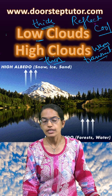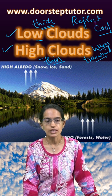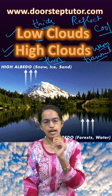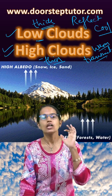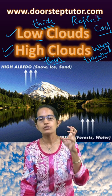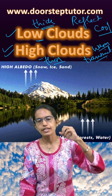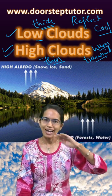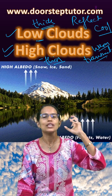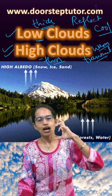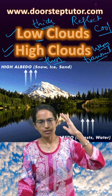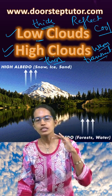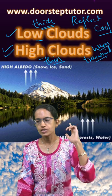So, that is one of the major differences between the low thick clouds and the high thin clouds. Low thick clouds reflect and keep the surface cool. However, high thin clouds are transmitting and therefore keep the surface warm.